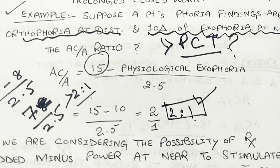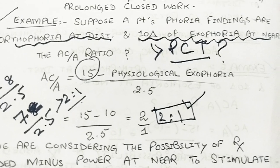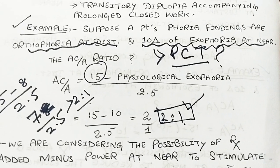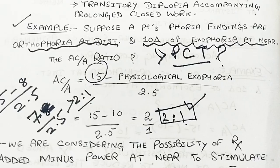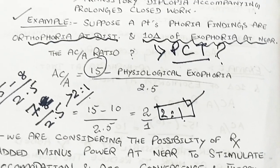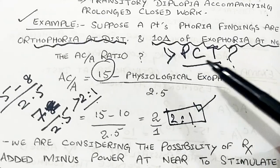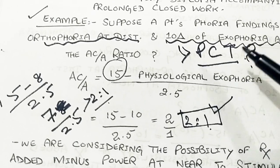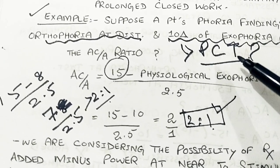Here we have an example. Suppose a patient's phoria findings are orthophoria at distance and 10 prism diopters of exophoria at near. That 10 prism diopters of exophoria we will find out by prism cover test. I will explain prism cover test in my next video.